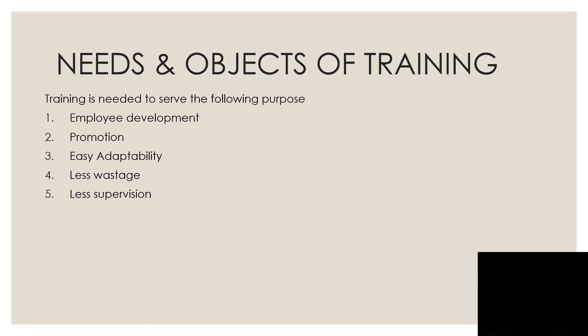The last objective of a training program is less supervision. The degree of supervision required for a trained worker will be less compared to an untrained worker. A trained worker will not be dependent upon the supervisor for minute details and may carry on his work by himself. On the other hand, an untrained worker will need constant watch and guidance from the supervisor very often.